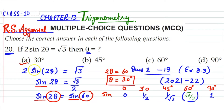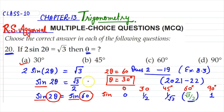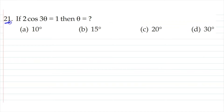If you have sin or cos in the question, you look up the value in that corresponding row of the table, identify which angle gives the simplified value, and that is your answer. Let's see the next question.